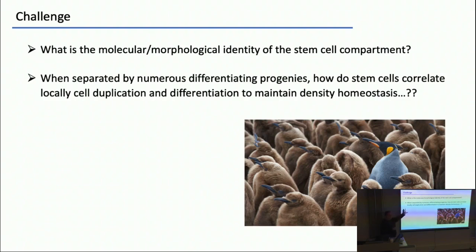An open niche is a niche where stem cells share that niche with their differentiating progenies. How do you balance fate on that background? This question is completely general — it applies to the bone marrow niche, to epithelial tissue types — and I think we have some answers here.